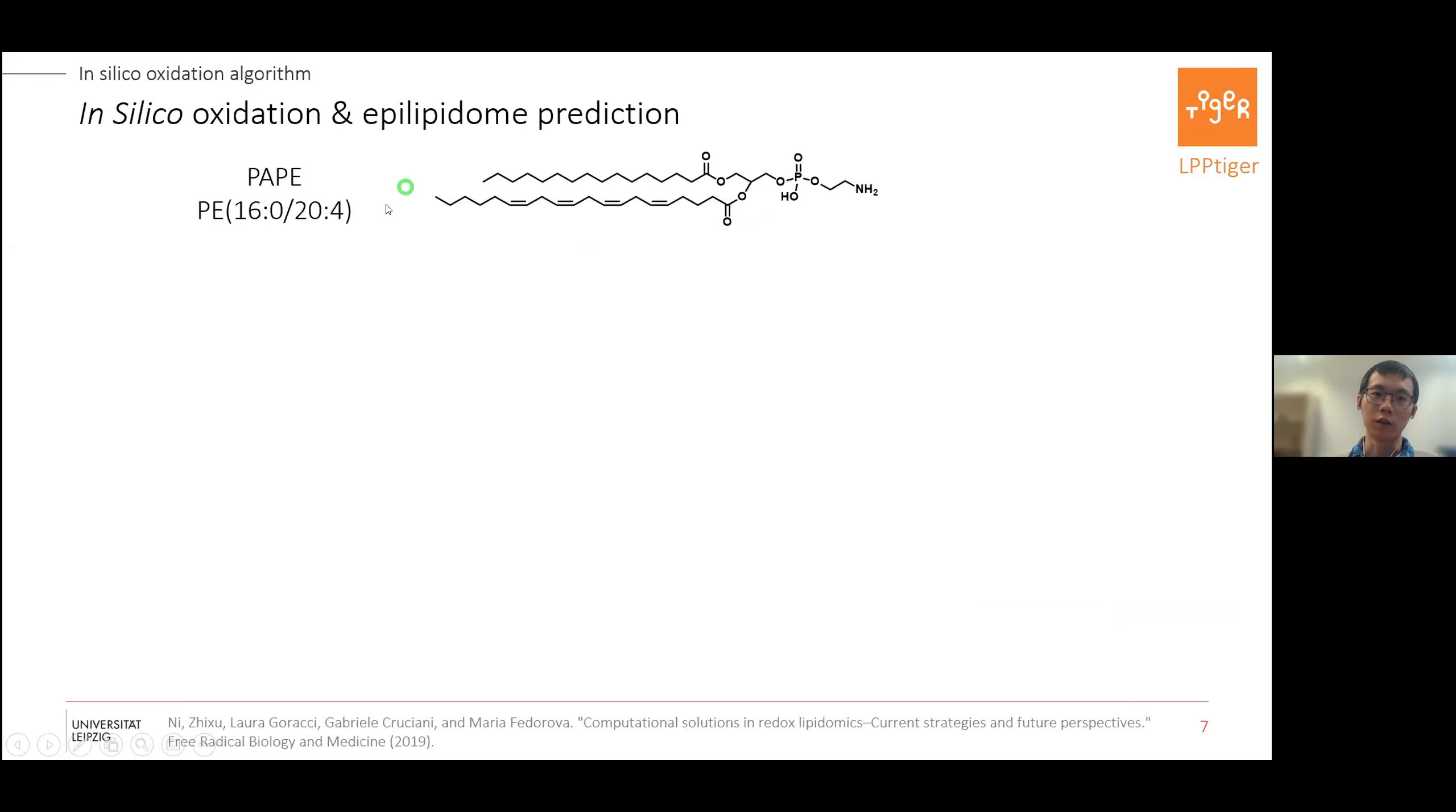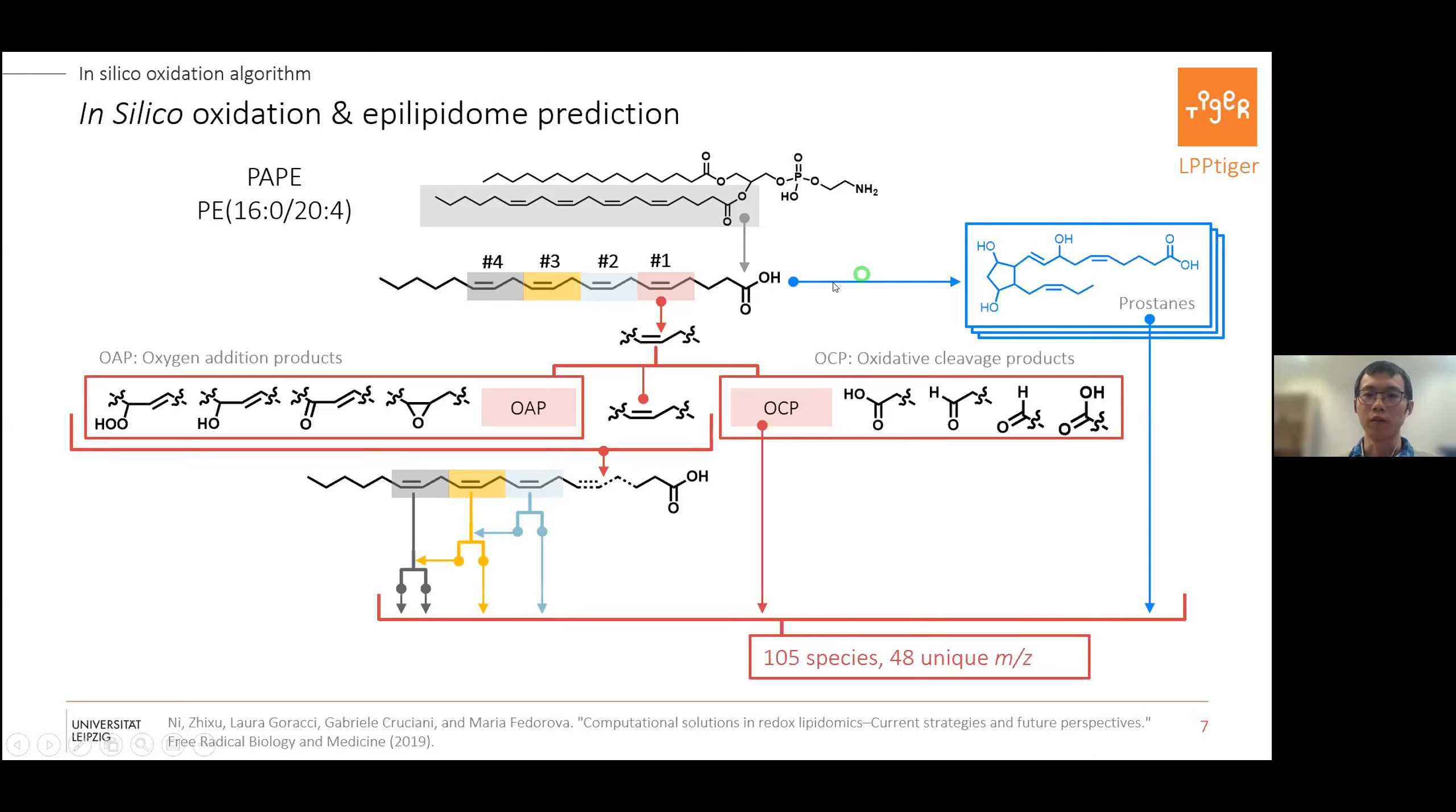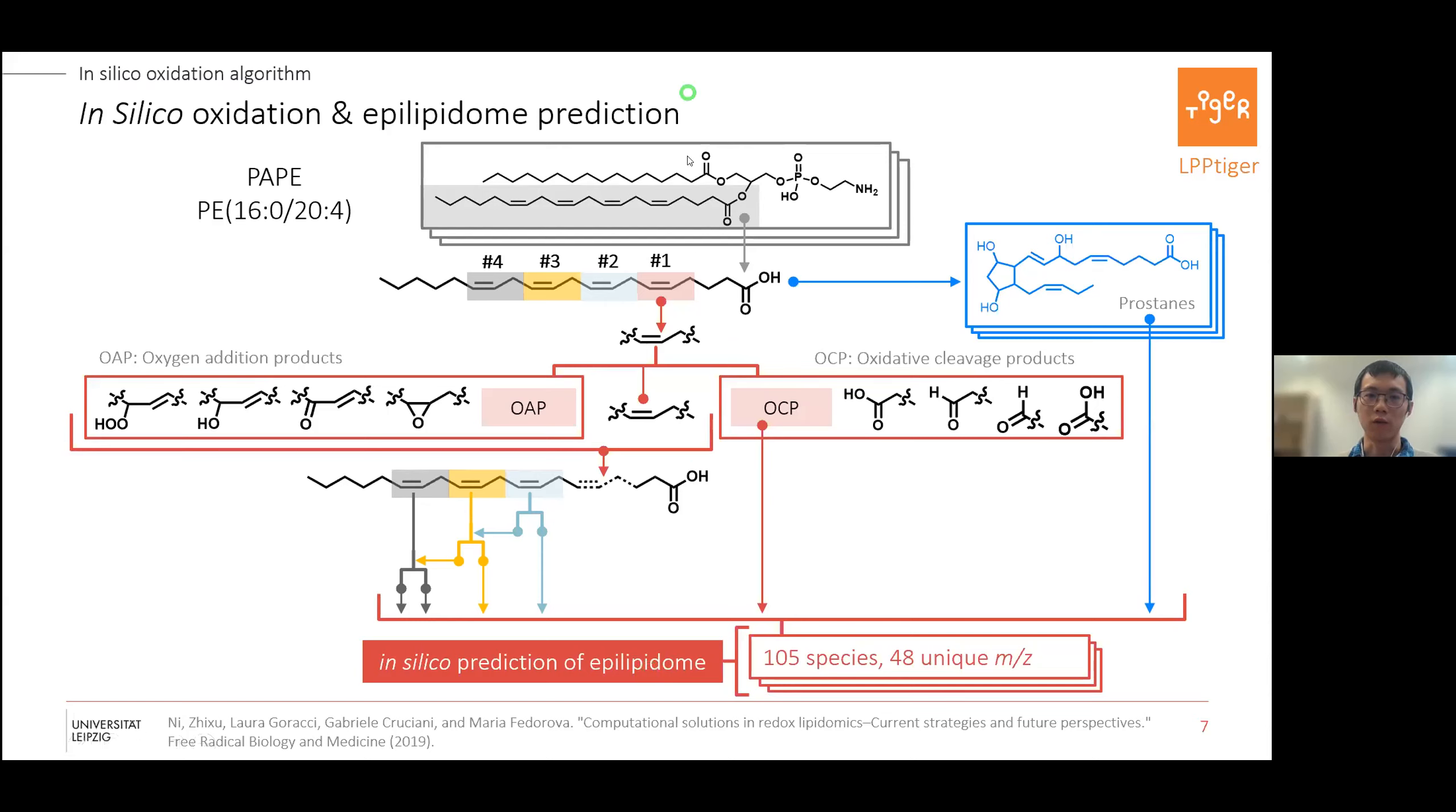This is an example. This is PAPE - we have 20 carbons with four double bonds here in this structure. We take this fatty acid, there are four double bond units. We take one of them and it can go for oxygen addition or just cleavage from here. If it's not cleavage, we can go to the next double bonds and so on. Since there are more than three double bonds it can also go to possible prostane structure. After final control, we come from one structure and get 105 possible products with 48 unique and more. Then we can go through all different candidates to get our specific epilipidome which we use later for identification.